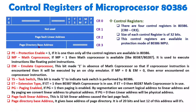CR3 holds the page directory base address. It contains 20 bits for the PDBR (Page Directory Base Register), and the last 12 bits are filled with zeros, giving a total 32-bit address that indicates the page directory base address. I will explain in detail how the page directory base address works when we cover paging.